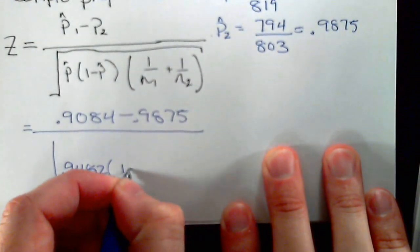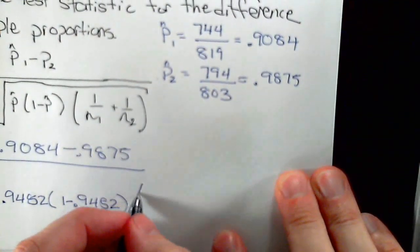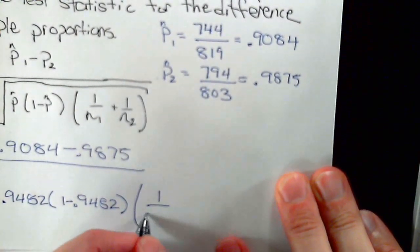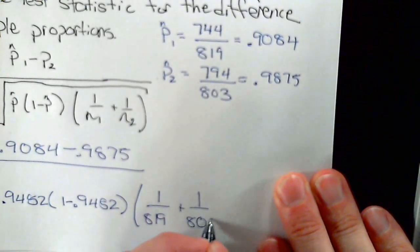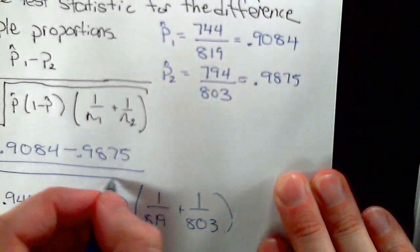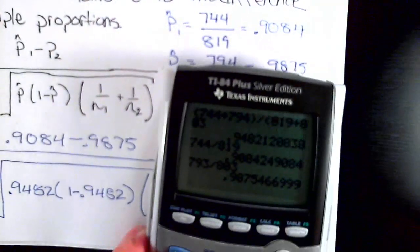1 minus 0.9482 times 1 over the first sample size 819 plus 1 over the second sample size 803, and then typing this all into the calculator.